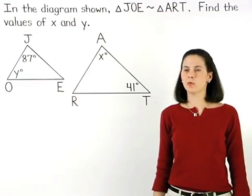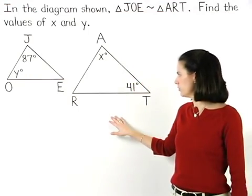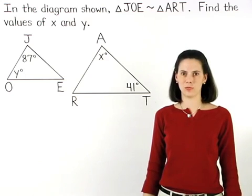In this example, we're given that triangle JOE is similar to triangle ART, and we're asked to find the values of x and y.